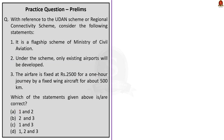The third question relates to the UDAN scheme and asks for the correct statement. Statement one says it is a flagship scheme of the Ministry of Civil Aviation — this is correct, as we saw in our discussion. Statement two says under the scheme only existing airports will be developed — this is completely incorrect, as the objective of UDAN is to develop regional air routes and operationalize a number of new airports in different states and UTs. Since statement two is incorrect, we eliminate options A, B, and D, leaving the correct answer as option C, that is statements 1 and 3 only.